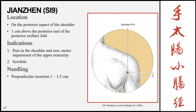Jianzhen, Small Intestine 9, is on the posterior aspect of the shoulder, 1 cun above the posterior end of the posterior axillary fold. First find the fold, go to its end, then go 1 cun directly superior. Indications include pain in the shoulder and arm, motor impairment of the upper extremities, and scrofula. Insertion is 1–1.5 cun due to the significant muscle in this region.